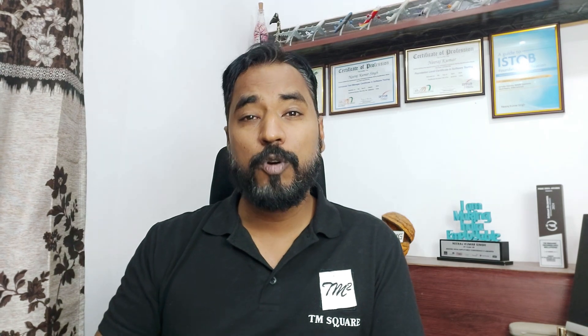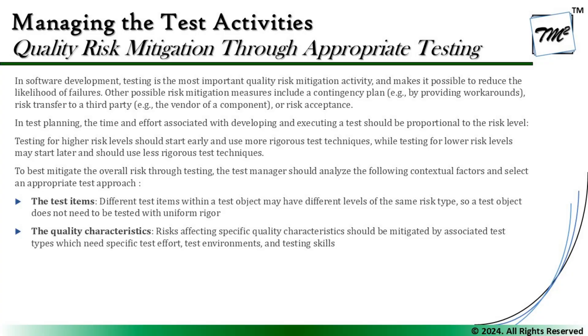If you have a high-level risk, you will do more testing compared to medium, and with a medium-level risk you will do proportionally more testing than for low. Testing for higher risk levels should start as early as possible in the life cycle and should use more rigorous test techniques, while testing for lower risk levels may start later and use less rigorous techniques. The amount of effort and testing we do for high risk is higher compared to medium and low respectively.